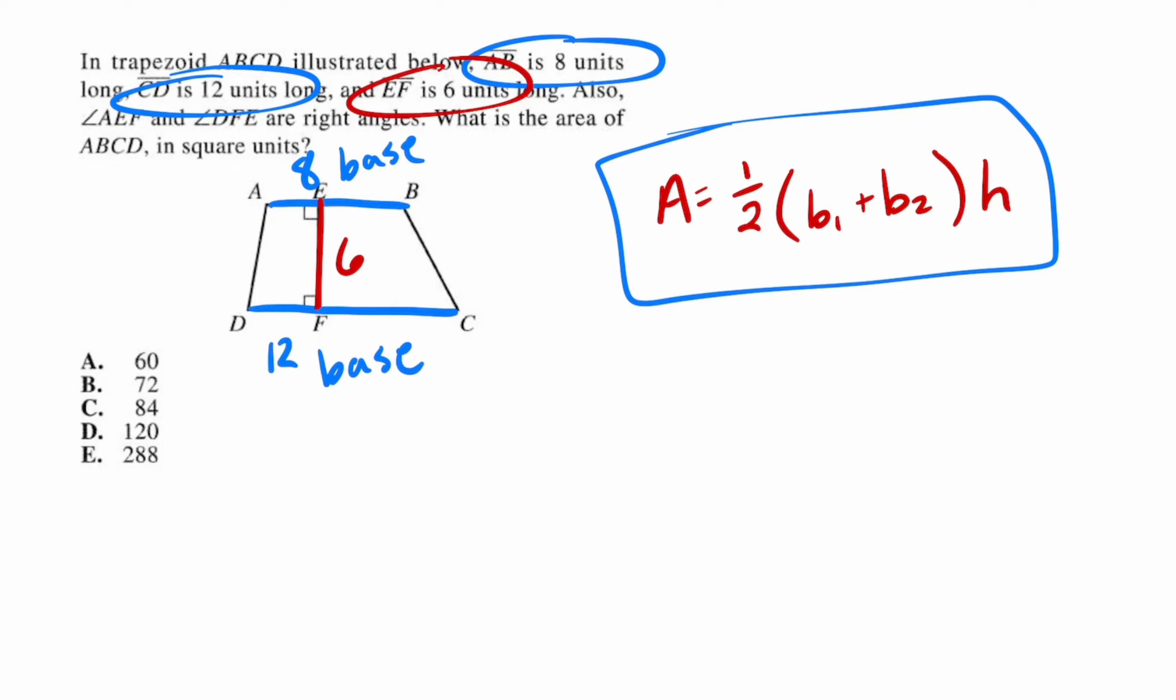So that right there is our two bases and our height. All that's left is to plug everything in and solve. We have area equals one half - that one half is just part of the formula, so it's always going to be there.